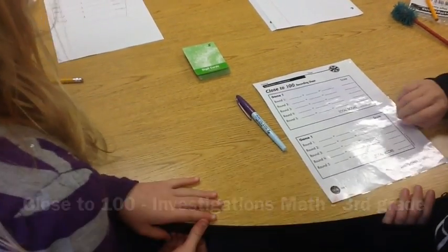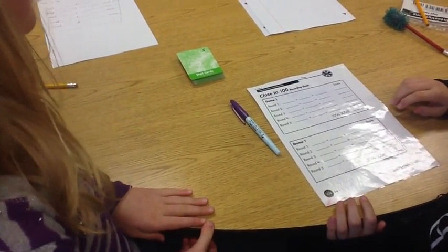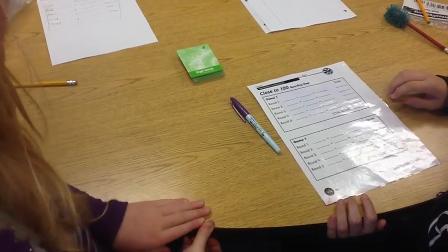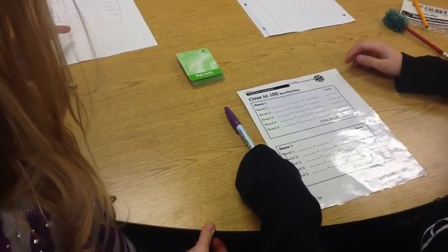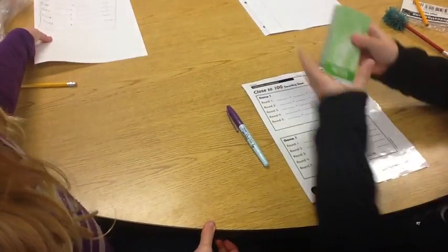We are going to play Close to 100, and the goal of this game is to get as close to 100 as you can. The supplies you will need are a recording sheet, a dry erase marker, and digit cards.